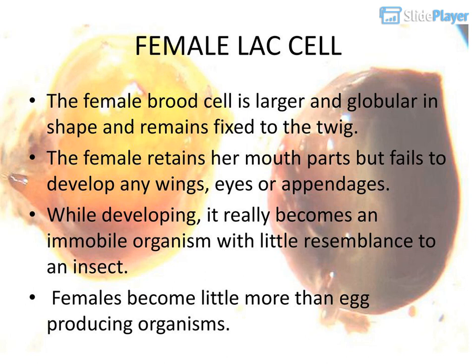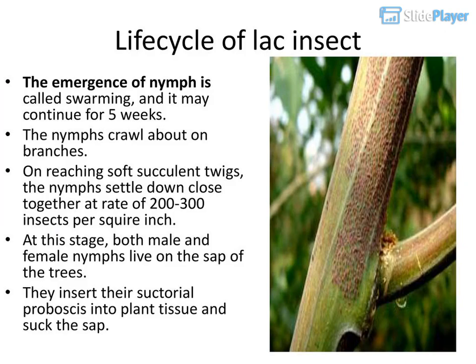The female brood cell is larger and globular in shape and remains fixed to the twig. The female retains her mouth parts but fails to develop any wings, eyes, or appendages. While developing, she really becomes an immobile organism with little resemblance to an insect. Females become little more than egg-producing organisms.